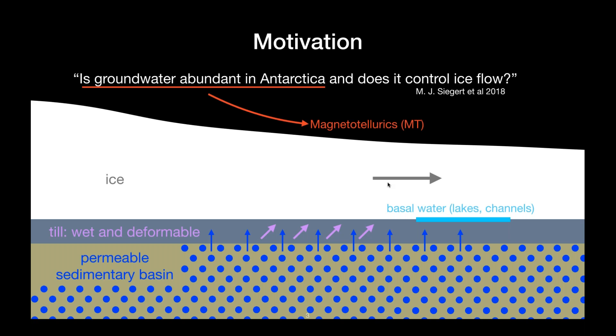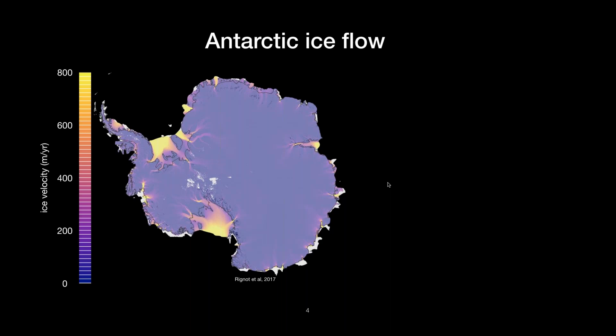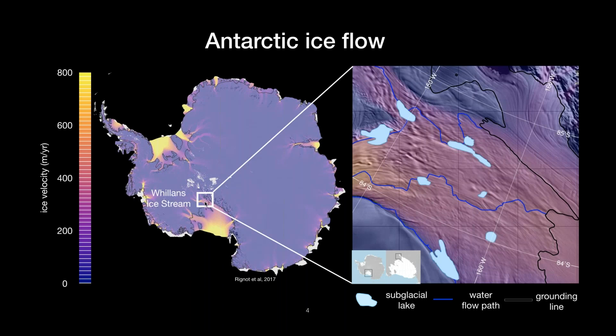For today's research vignette, I'll just focus on answering the first part of this question and how we're answering it with magnetotelluric data. Regions in Antarctica that have fast ice flow modulated by hydrology at the base of the ice sheet are called ice streams. This map of Antarctica is showing ice flow, where warmer colors represent higher ice flow velocities. Our ice streams are just these fast-flowing features extending into the interior of Antarctica, and the results I'll show today are from the Willens Ice Stream, which we know has a deformable till layer and a subglacial hydrologic system at the base of the ice.